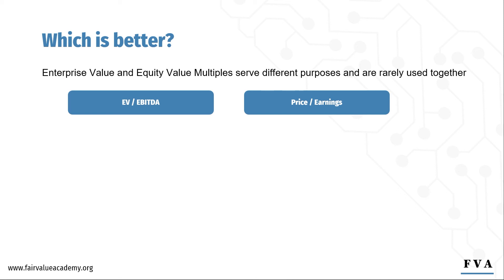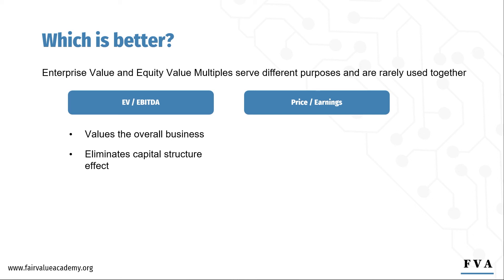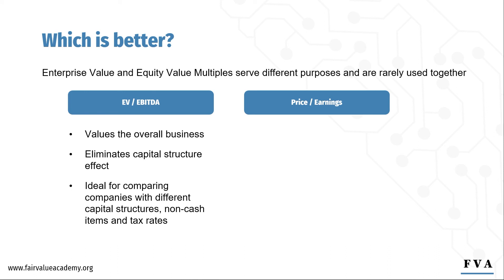So EBITDA sort of normalizes companies which are highly capital intensive. EV/EBITDA values the overall business and takes into account all the sources of funding that went into investing in the assets of the business. It eliminates capital structure effects — as with ROIC solving the problems of ROE — and it's ideal for comparing companies with different capital structures, non-cash items, and tax rates. Lastly, EV/EBITDA is the go-to multiple for M&A investors and private equity professionals.